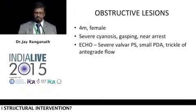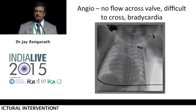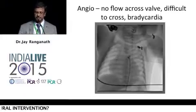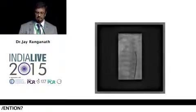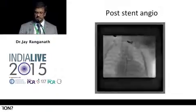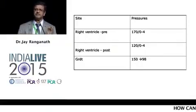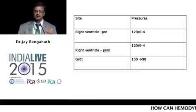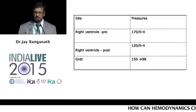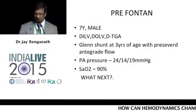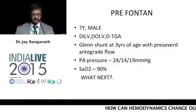Coming to obstructive lesions. A child arrested on the table — shifted from casualty. During manipulation in the RV, bradycardia and arrest occurred. There was an arterial line. I put a balloon to try to relieve the crisis — pericardiocentesis was done. Post-tenting, after two days, I did a balloon valvuloplasty, but the result was not good. RV pressure was still 120 post-procedure. We are not dealing with a standard garden-variety pulmonary stenosis — probably a hypoplastic pulmonary annulus, small hyperplastic annulus. We need to come out and tell the parents this balloon valvuloplasty is only a palliation. These children have to go for a final surgical procedure — valvotomy and augmentation of the annulus.